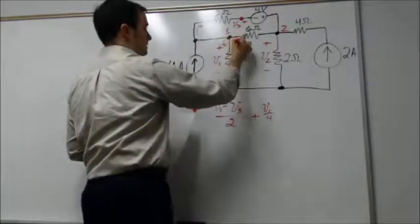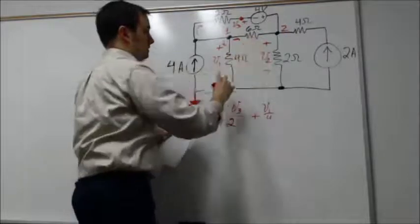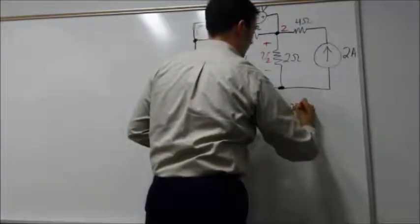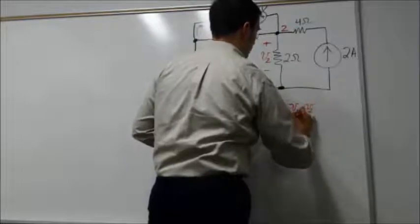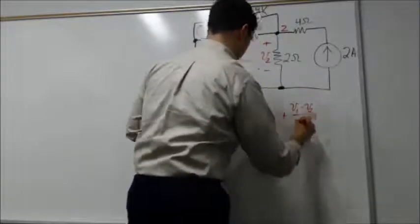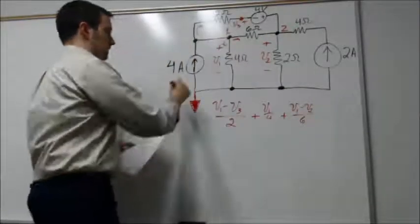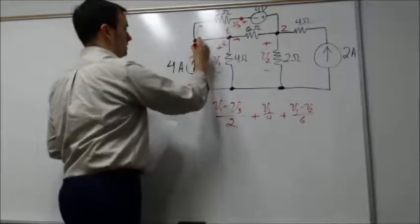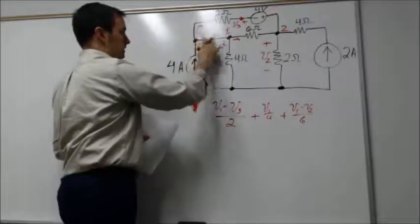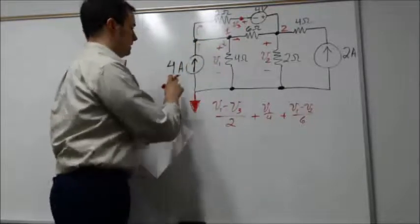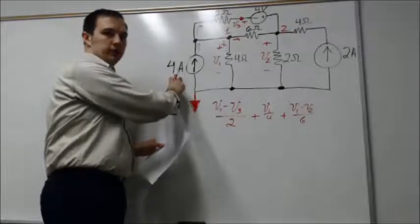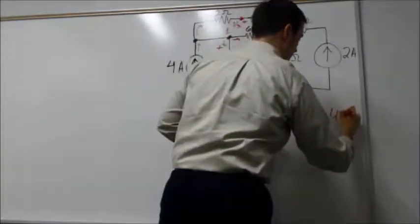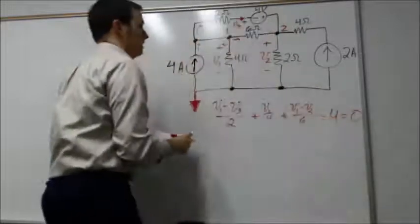Now look at the current traveling out of this node going down this branch. That's simply V1 over the 4-ohm resistor. Then going in this direction across the 6-ohm resistor, we have (V1 - V2)/6 ohms. The other current, from this current source into the node, is the 4 amps, which is a negative quantity because it's flowing in. So that's minus 4, all equal to zero.